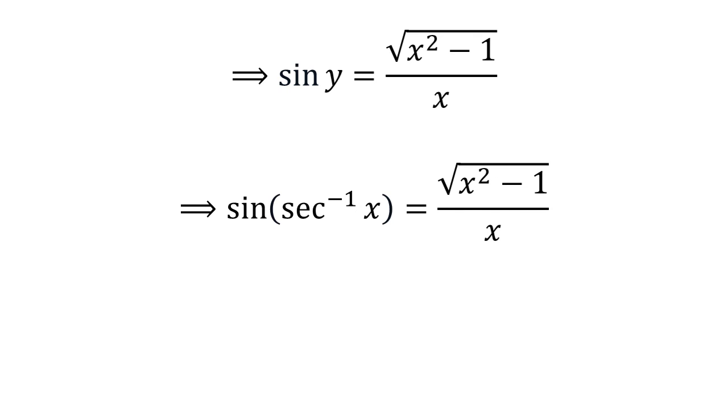As we had assumed, y is equal to arc secant of x. So sine of arc secant of x is equal to square root of square of x minus 1 divided by x.